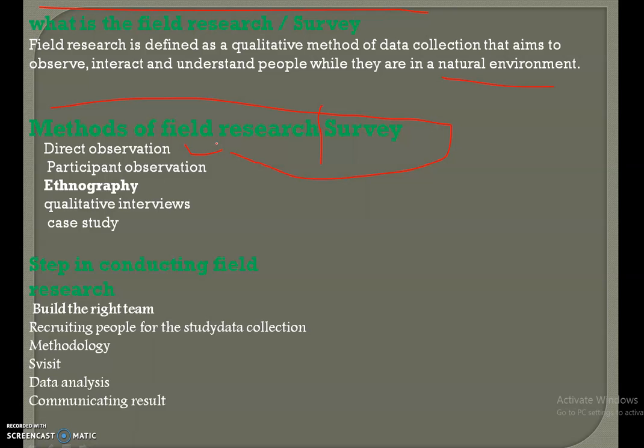In the direct observation method, data is collected via observational method of a subject in a natural environment. The behavior or outcome of a situation is not interfered with in any way by the researcher. The advantage of direct observation is that it offers data on people, situations, interactions, and surroundings. This method is widely used in public settings but not in private environments, as there is an ethical dilemma.